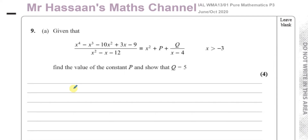So what I'm going to do is write the denominator on the outside of my division: x squared minus x minus 12. There's nothing missing here — everything is there. You've got the squared term, the x term, the constant term.